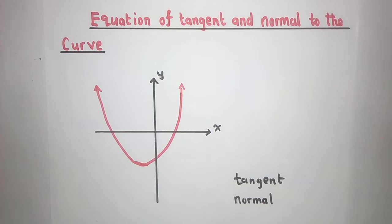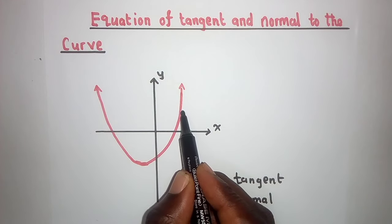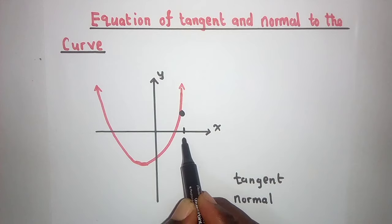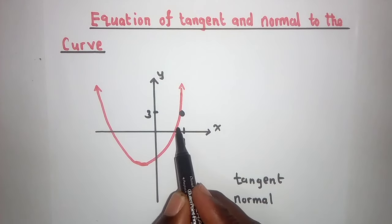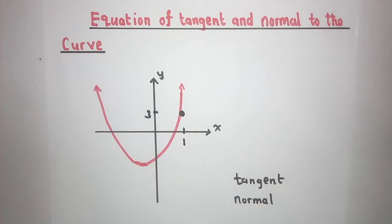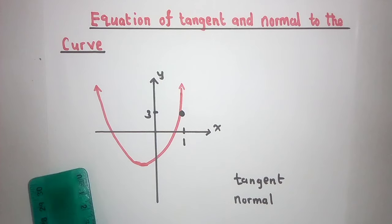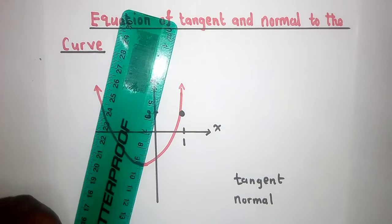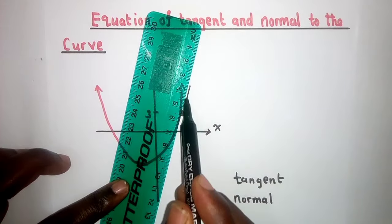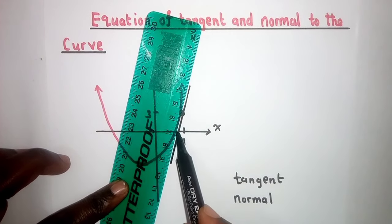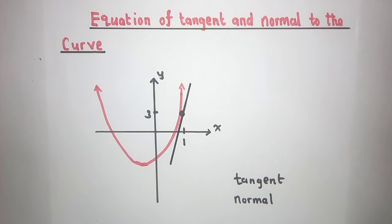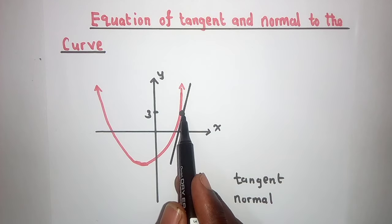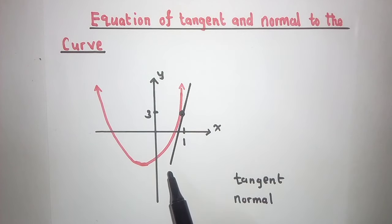When we talk about tangent, let's say you've got a point right here — maybe (1, 3) — this is a point right here. To show the tangent, the tangent line on this point must look like this. We know that a tangent line is a line that is touching a curve at one point, or a circle at just one point. This is a tangent line.